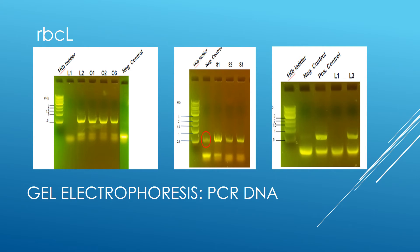As you can see in these gels, samples L2, L3, S1, S2, S3, O1, O2, and O3 were successful, but sample L1 was not. An anomaly, however, was that the negative control had an additional band, not just primer dimer, meaning DNA was present when there should not have been any. This error could have occurred for multiple reasons, such as experimental error.